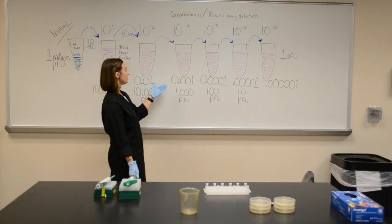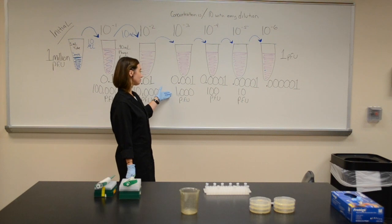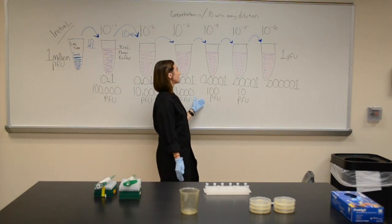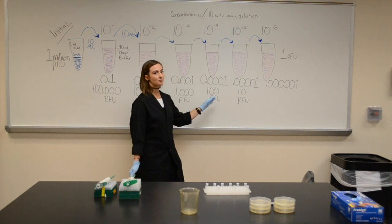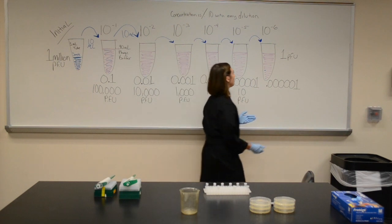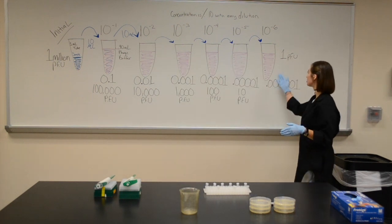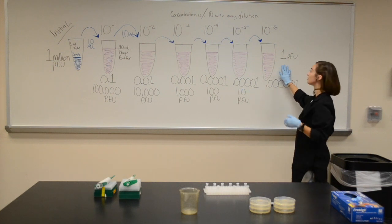Divided again for the 10 to the minus third would be 1,000 plaque forming units. 10 to the minus fourth would be 100, which is getting to be more of a countable number. 10 to the minus fifth would be 10, and 10 to the minus sixth, if you start with 1 million plaque forming units, would be 1.